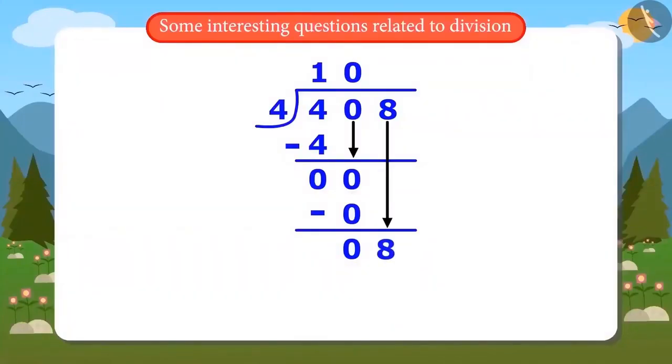Now, write down 8 and divide 8 by 4. The answer is 2 because 4 multiplied by 2 is 8 and the remainder is 0. This means that 408 divided by 4 is 102.